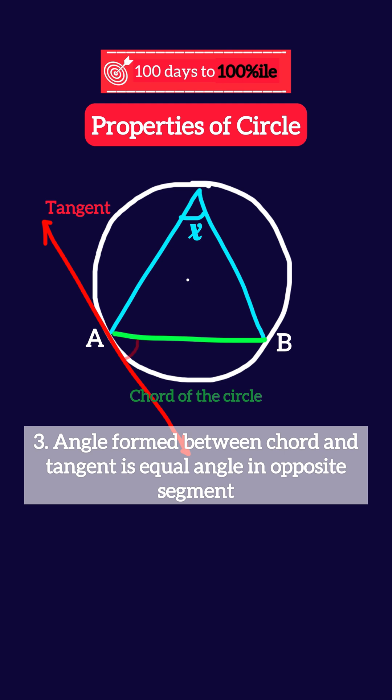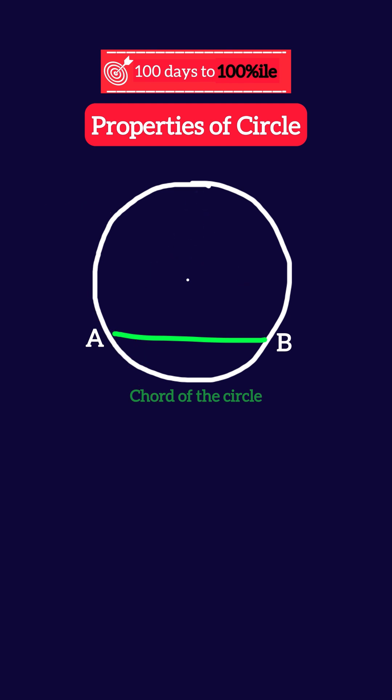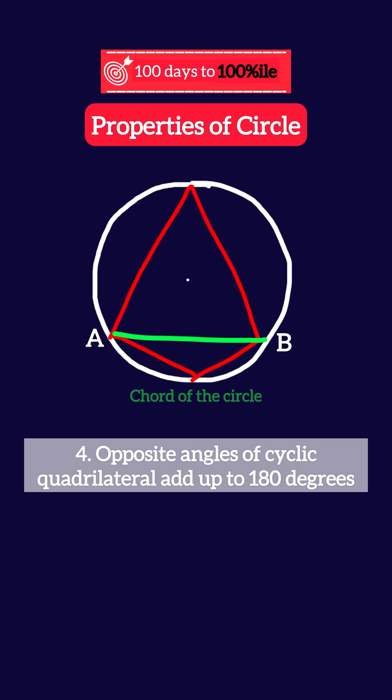Number three: the angle formed between the chord and the tangent is equal to the angle formed in the alternate segment. Number four: a cyclic quadrilateral is a quadrilateral that...